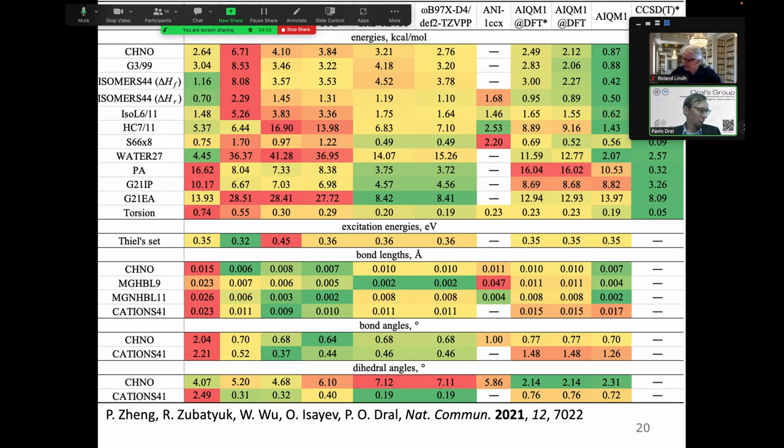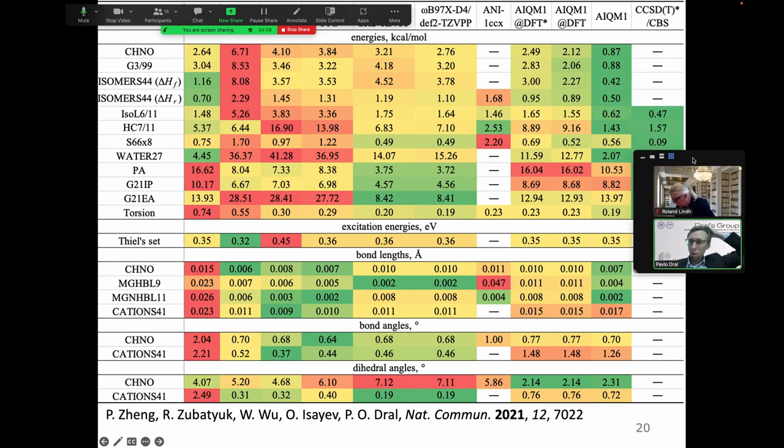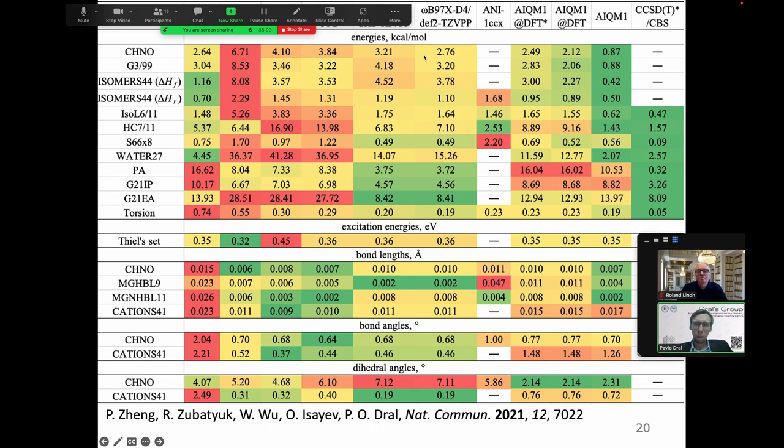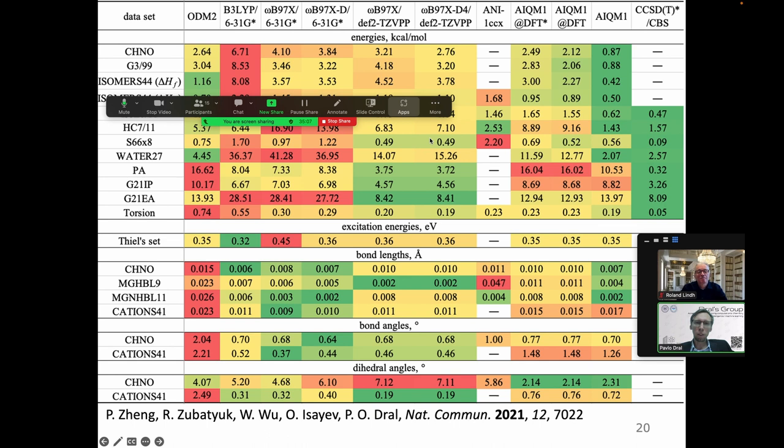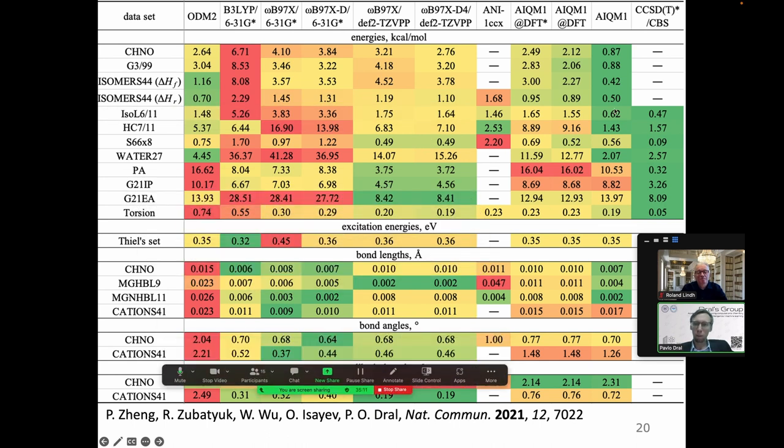This is all theory, but I was claiming that it is good. How good is it actually? Here we go to this big table. Although the table is big, what is more important is to focus on colors. If it's green it's good, if it's red it's bad. We compare semi-empirical methods, DFT with different functionals, double zeta, triple zeta, plus machine learning ANI-1CCX, AIKM1, and coupled cluster. The quick glance shows us that this level of theory coupled cluster is very good - it's all green comparison to other methods as expected. AIKM1 is also green for many points. ANI-1CCX cannot be used for many datasets because it doesn't work for charged species and so on. That means AIKM1 is more transferable.